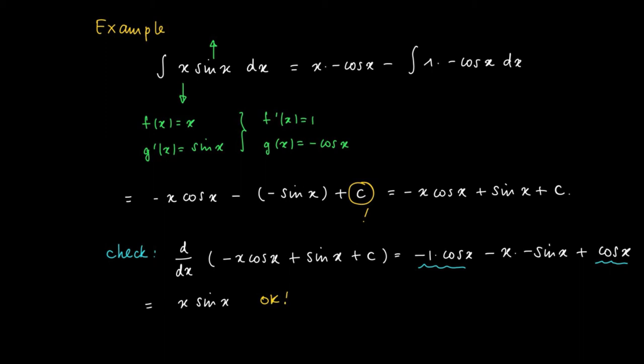The technique of partial integration here was especially effective since we got rid of the extra term x, and the remainder was a trigonometric function which we could easily integrate. So this is basically how it works.